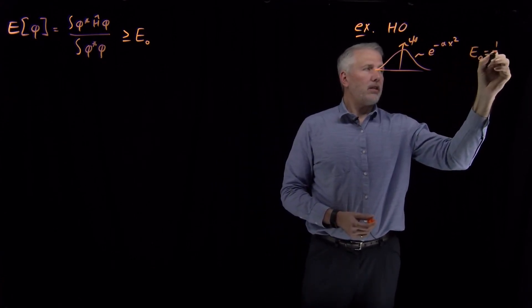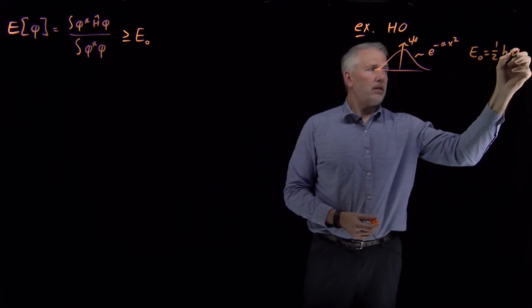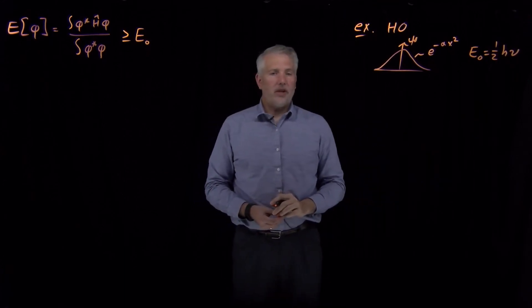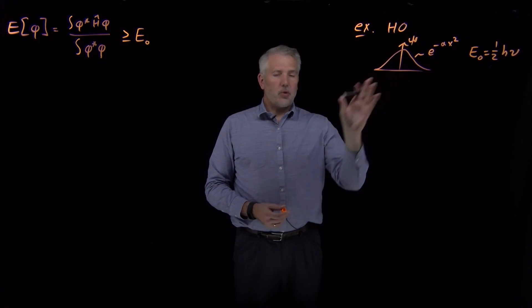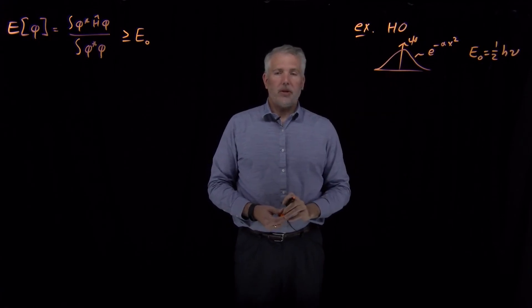And the energy, the ground state energy for the harmonic oscillator is what we call the zero-point energy, one-half h nu. That's just a reminder of what we already know about the harmonic oscillator.